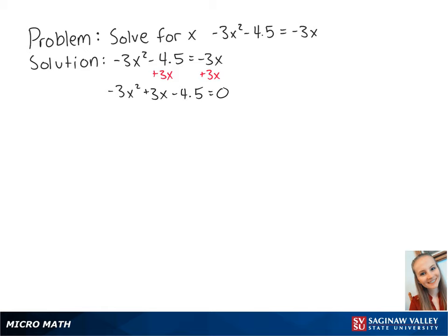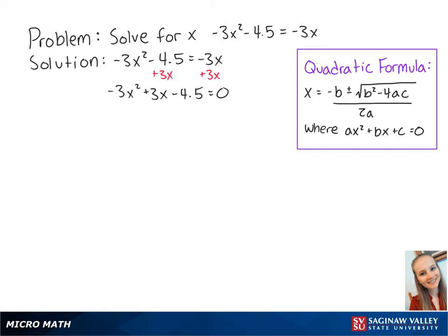Since the left side can't factor out, we're going to use the quadratic formula to solve for x. In this equation, a equals negative 3, b equals 3, and c equals negative 4.5.